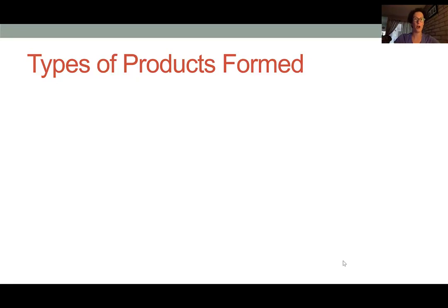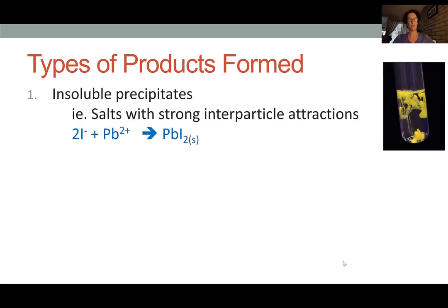In addition to solid precipitates, there are other types of products that can come from one of these types of reactions. So again, the simplest way of describing these reactions is as precipitates. So this is when we create a solid by combining two aqueous ions.